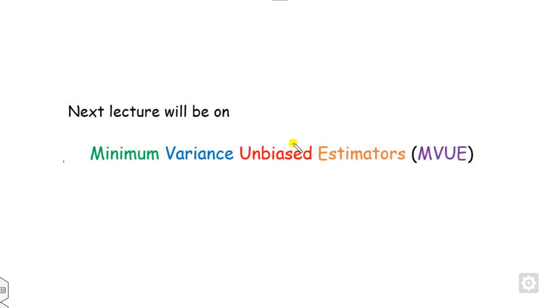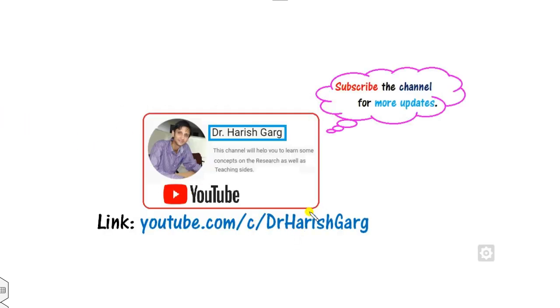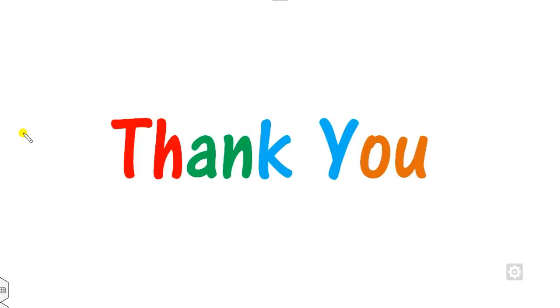I hope you enjoyed this short video. If you have any doubt you can ask me. We will see in the next lecture the most important property: the MVUE — minimum variance unbiased estimator. Till then, follow the link for updated videos.